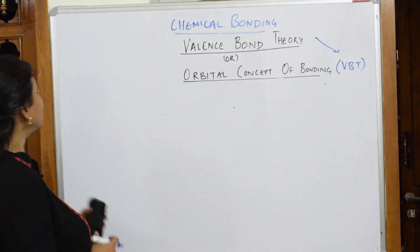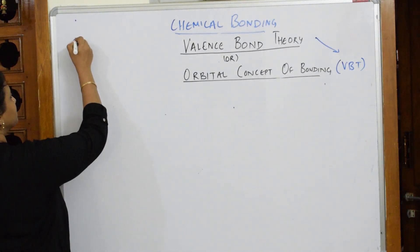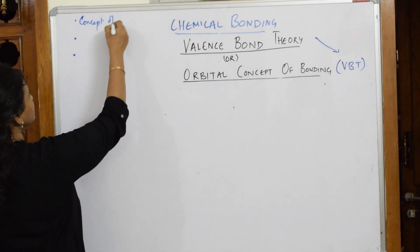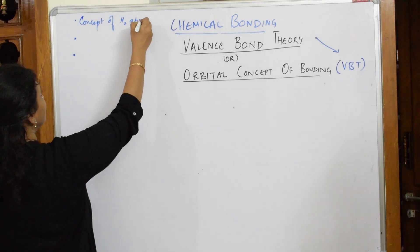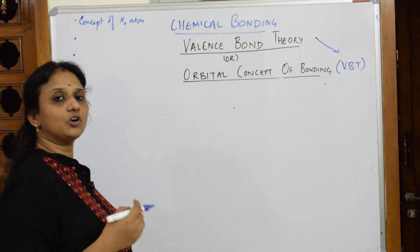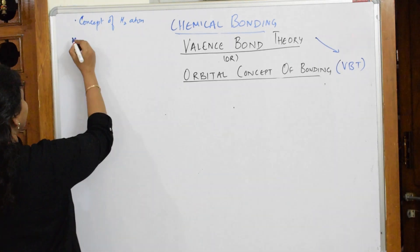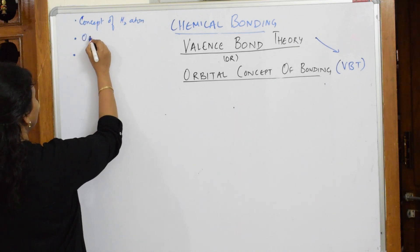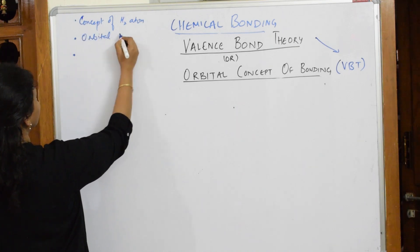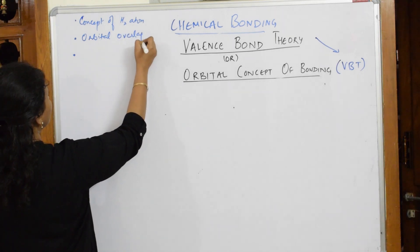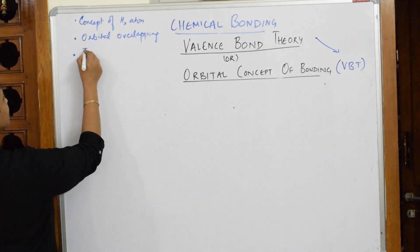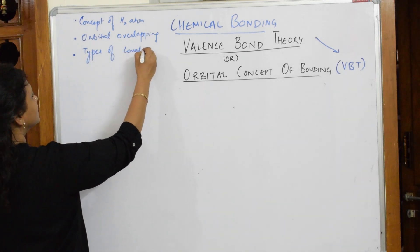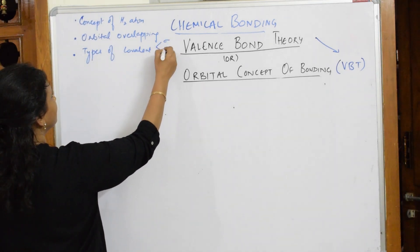In this VBT theory, you have three subtopics. First would be the concept of hydrogen atom, where we're going to speak about the overlapping of orbitals. Then I'm going to teach you about orbital overlapping. I'll also be teaching you about types of covalent bonds — that is sigma bond and pi bond.